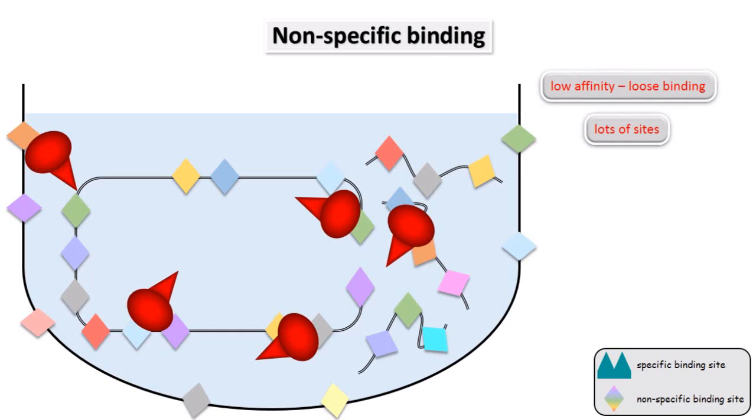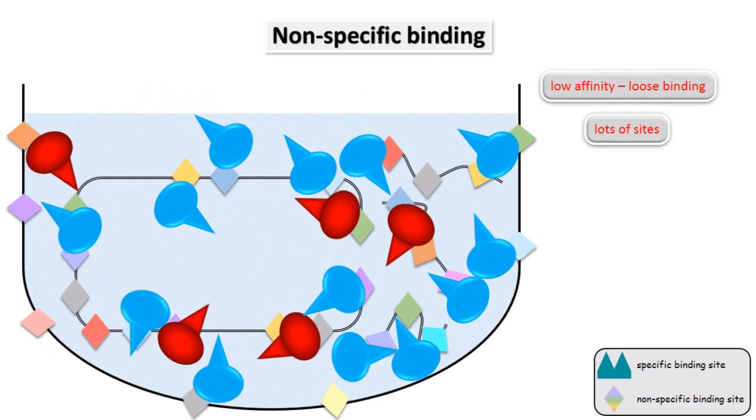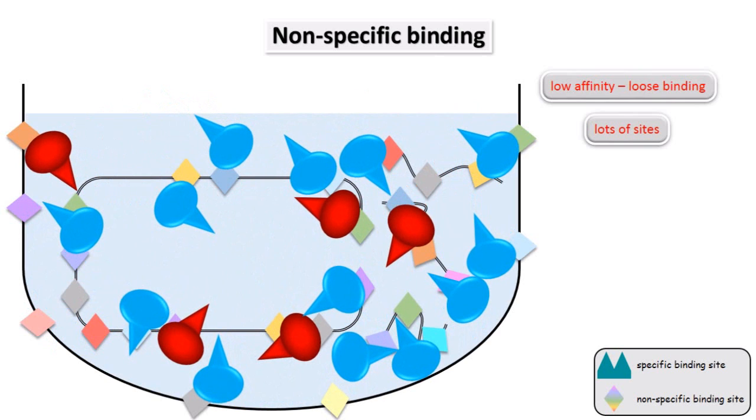Let's see what happens this time when we add an excess of cold ligand. Hot and cold ligands move around and interact with the non-specific sites as they encounter them. But this time, there are enough sites for the cold ligand to occupy without having to compete with the hot ligand, so the hot ligand is not displaced.